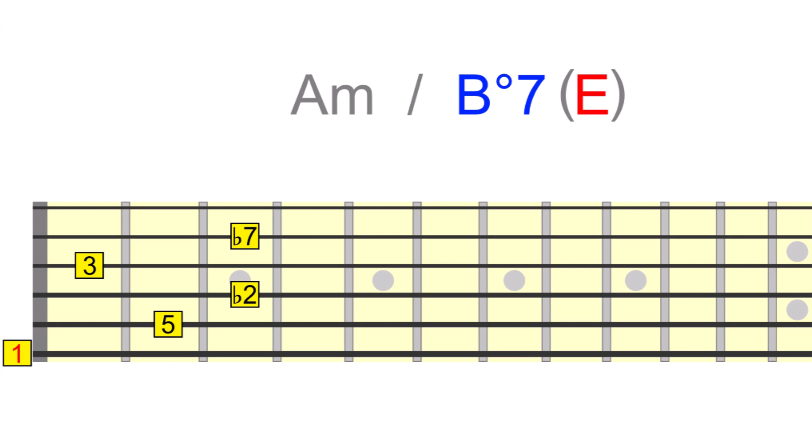What we've essentially done here, by playing the diminished 7th shape over the E, is add a minor 2nd interval to the dominant. And using the symmetry once again, we can move this tension up the neck as follows.